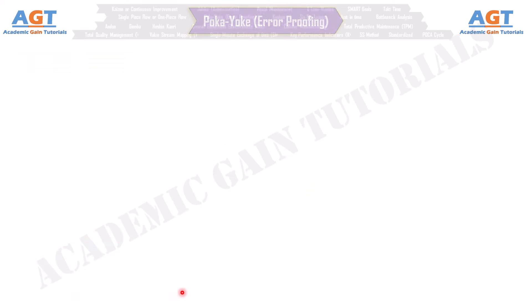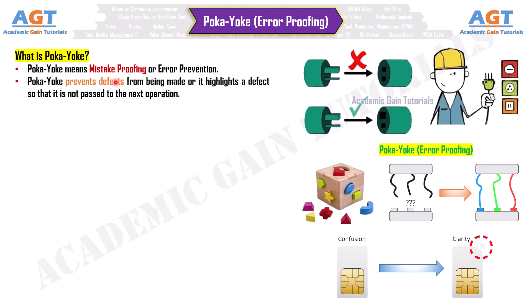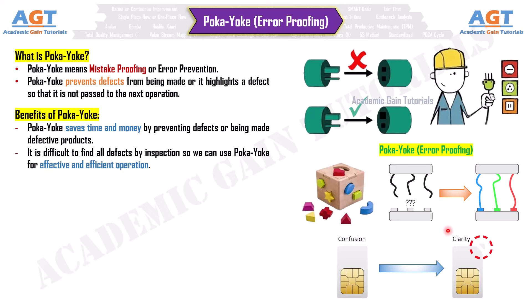Number 4: Poka Yoke. Poka Yoke means mistake-proofing or error prevention. It prevents defects from being made or highlights a defect so that it is not passed to the next operation. Benefits: Poka Yoke saves time and money by preventing defective products. It is difficult to find all defects by inspection, so Poka Yoke enables effective and efficient operation. Poka Yoke prevents human error and is a very important tool.